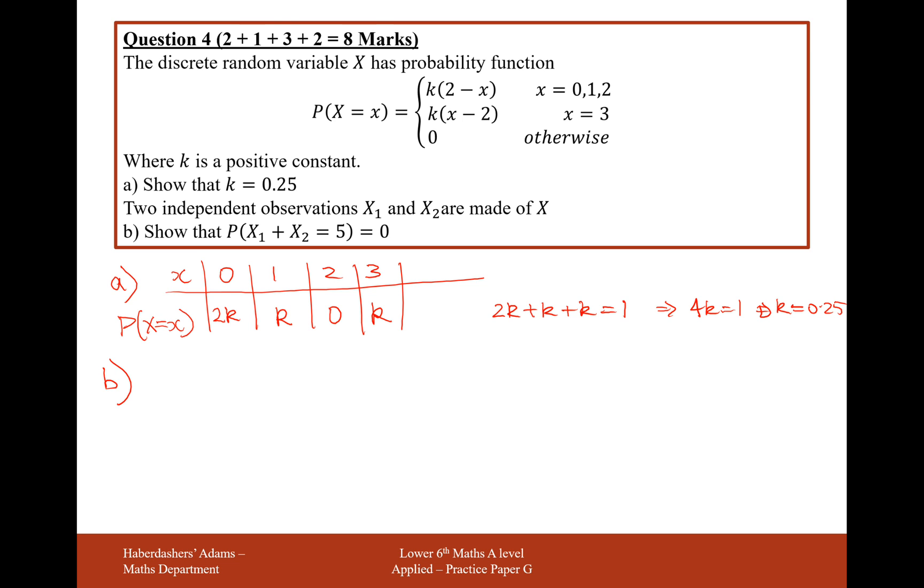Part B: Two independent observations, X1 and X2, are made of X. We could think of this as a four-sided dice with the values 0, 1, 2, and 3 on it. What we're looking to do in Part B is show that the probability of adding our two rolls of our dice up and equaling 5 is equal to 0.